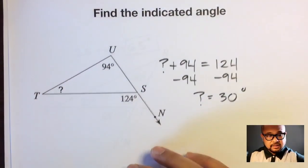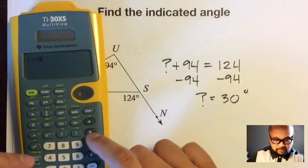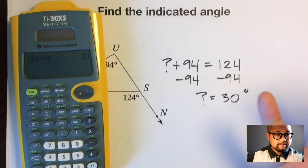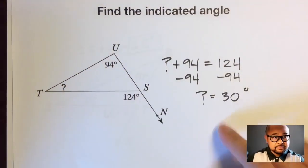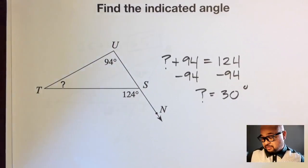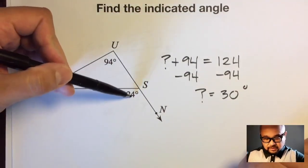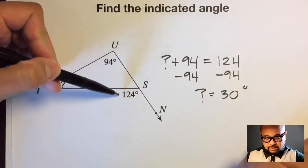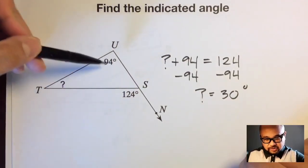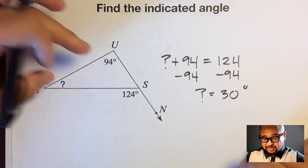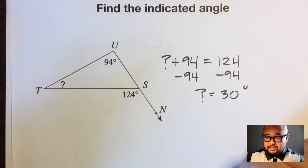That is it. Double check: 124 minus 94 is 30 degrees. That's just an alternative way of doing it — instead of subtracting 124 from 180 to get one angle, and then doing more steps, you just add the two non-adjacent interior angles and set them equal to the exterior angle.